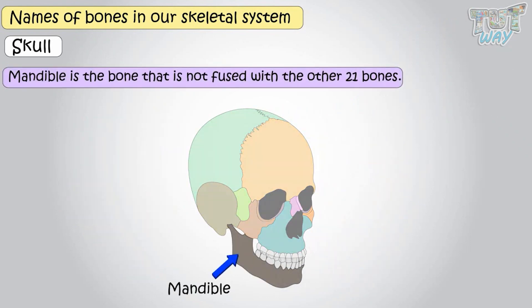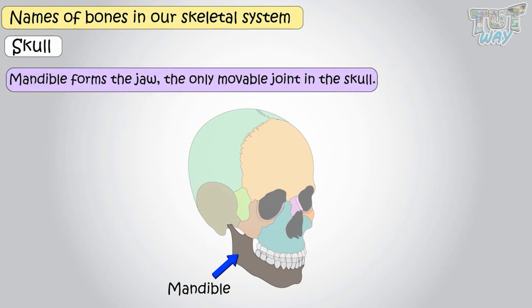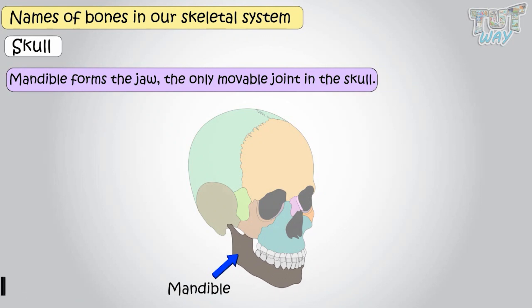The mandible is the bone that is not fused with the other 21 bones. It forms the jaw, which is the movable part, and forms the only movable joint in the skull.